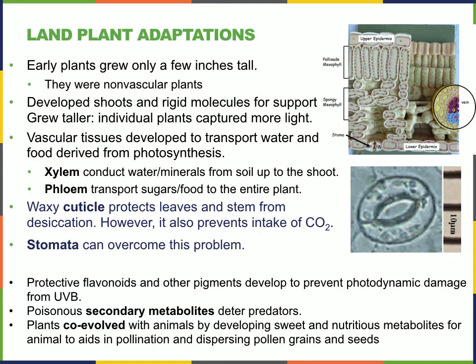Early plants grew only a few inches tall because they were non-vascular. Individual cells had to be able to get water, so plants had to be in a moist environment and couldn't be far from water. On land, plants developed shoots and rigid molecules for support to reach light, growing taller to capture more light. As a prerequisite for getting really tall, plants had to develop vascular tissues — xylem and phloem — to transport water up and food derived from photosynthesis down.